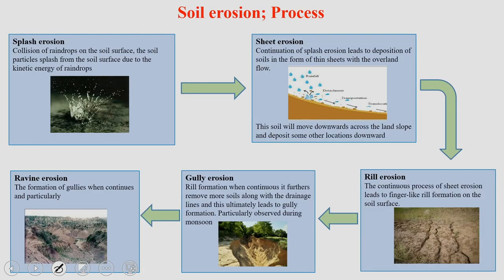The processes largely involved in causing soil erosion: first is splash erosion. As the name suggests, when a raindrop hits the ground with a certain amount of momentum, it splashes the soil from the surface due to the kinetic energy of the raindrops. That is one way soil erosion can take place.